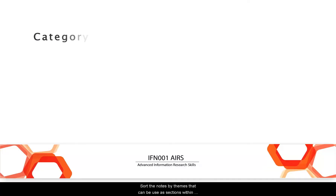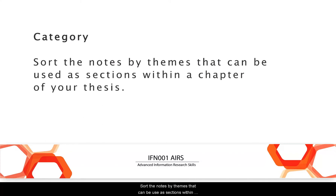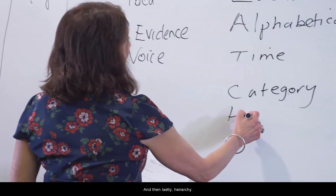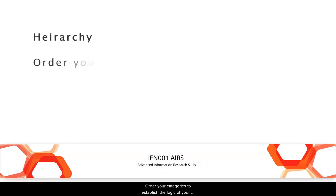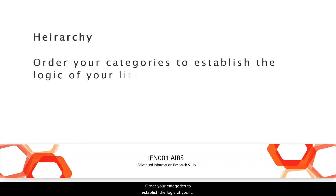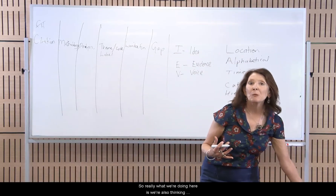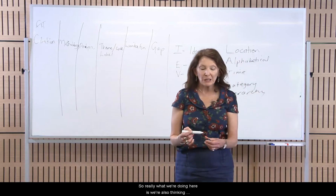C is for category — sort the notes by themes that can be used as sections within a chapter of your thesis. And then lastly, H is for hierarchy — order your categories to establish the logic of your literature review.